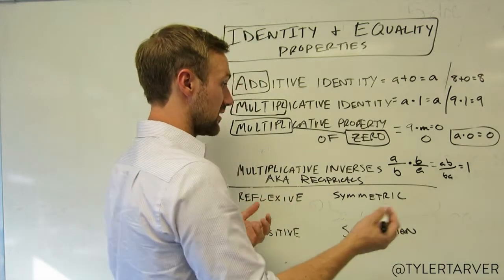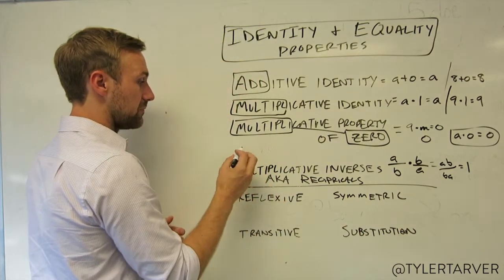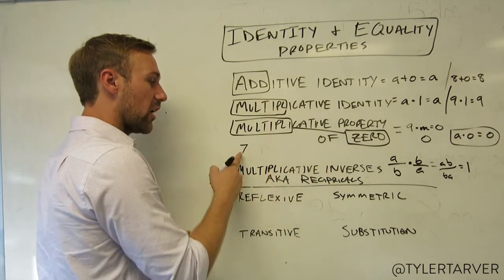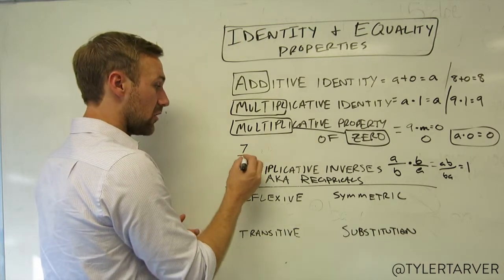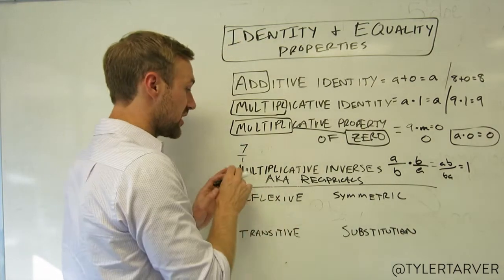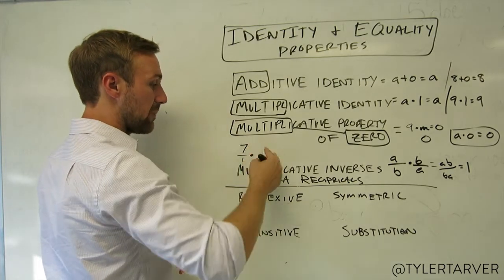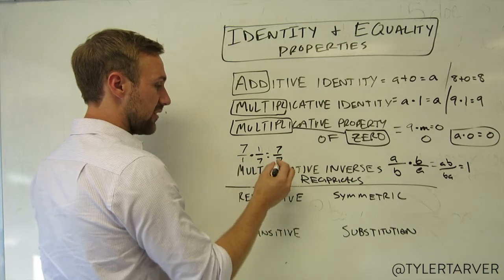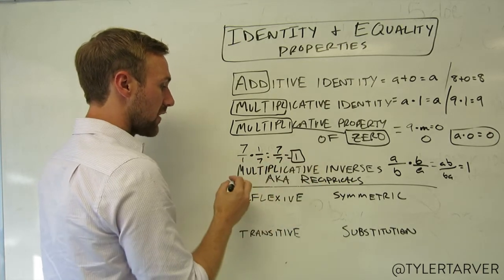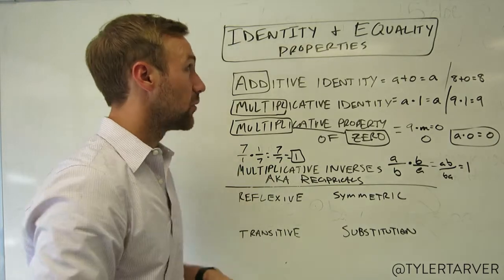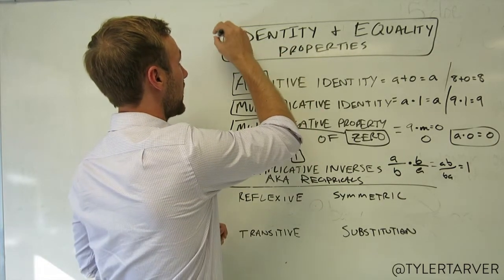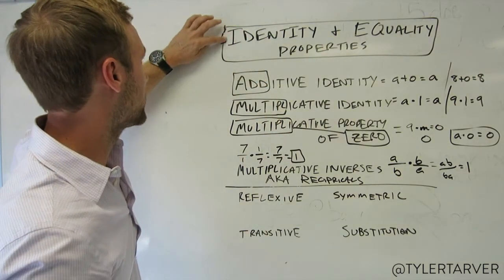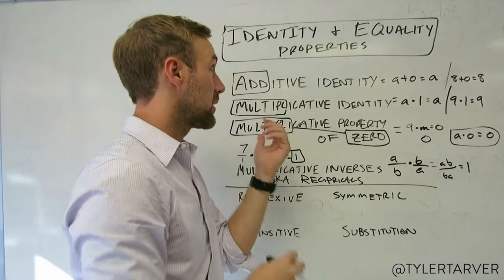For instance, let's say you had seven. Seven is always over one. The flip of that would be one over seven. Multiply across: seven times one over one times seven gives you seven divided by seven, which equals one. That's the multiplicative inverse. And that covers all of our identities.